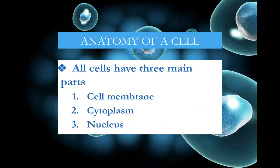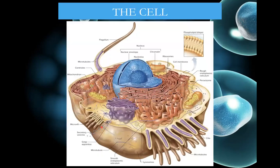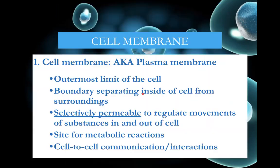All cells have three main parts: the membrane, the cytoplasm, and the nucleus — the outside, the inside, and the inside-inside. Here's a good picture of an animal cell. The nucleus is at the center, everything around it is the cytoplasm, and then the membrane is what encloses it all.